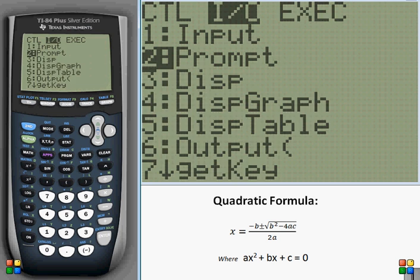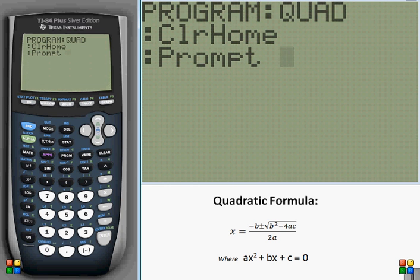So go over to prompt, and now enter in the three variables: A, B, C, and press enter. So that'll prompt for three variables and store them as A, B, and C.